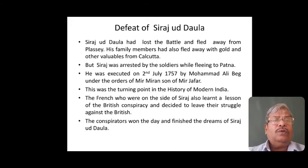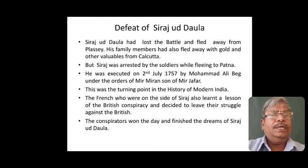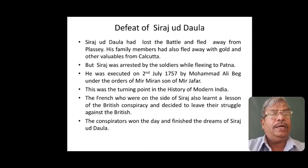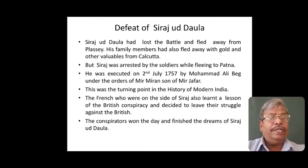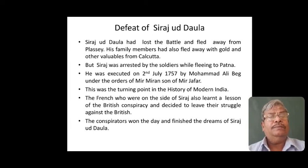Now let us see what happened after the Battle of Plassey. Siraj ud-Daulah, who had lost the battle, fled away from the battlefield of Plassey. His family members, who were stationed at the palace of Calcutta, also fled towards Patna. When Siraj ud-Daulah was about to reach Patna, he was arrested by the followers of Mirjafar. He was then killed on 2nd July 1757 by Mohammed Ali Beg under the orders of Mir Miran, son of Mirjafar.